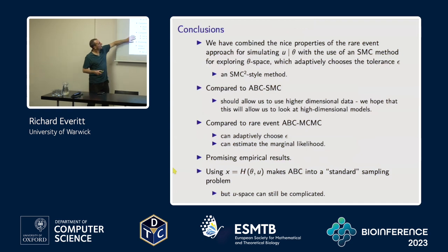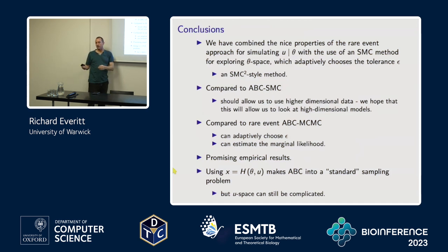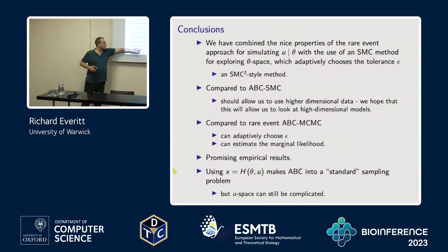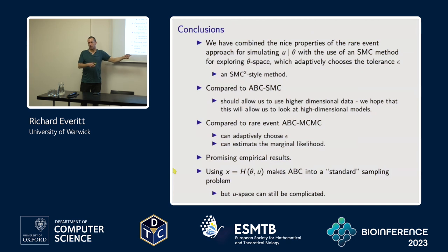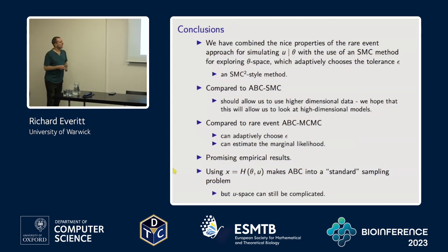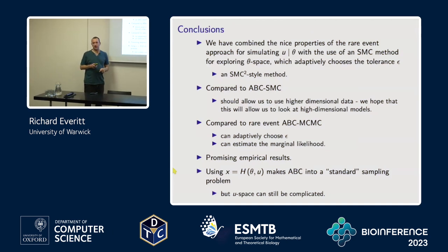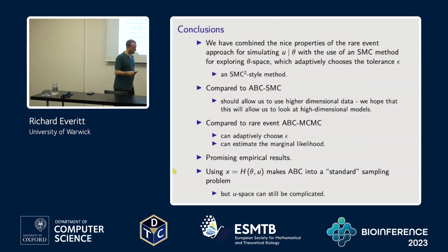So what have we done here? We've got an algorithm where compared to ABC SMC, the likelihood estimator doesn't die and it can go to much smaller tolerance values. Using this reparameterization makes ABC sampling into a standard sampling problem, so we can use whichever algorithms we want. This is an SMC squared algorithm — it works pretty well, and I'm sure there are others that will also work well. We do have to account for the fact that this U space could be extremely complicated.